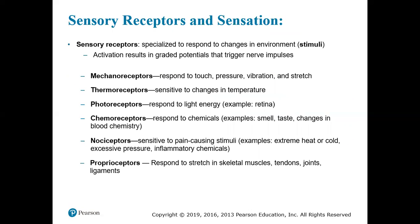Sensory receptors are specialized parts of a neuron that are specialized to respond to some type of stimuli. Depending on the construct of a particular receptor, it will deliver its ability to receive information. For example, not all nerves feel pain — those are called nociceptors. When we think about a sensory nerve, we break that down into a bunch of other parts.